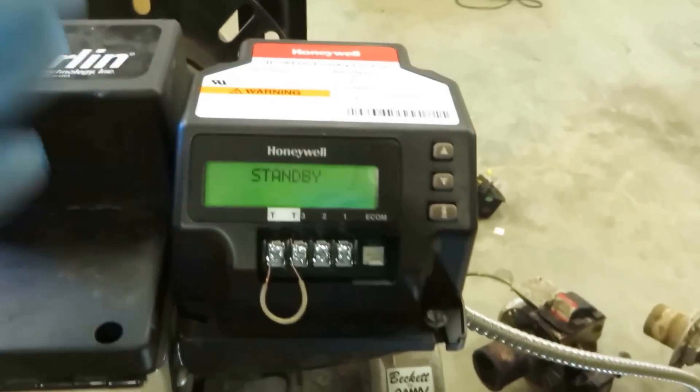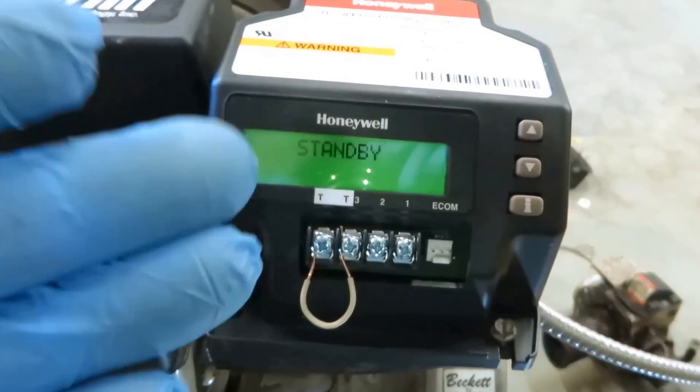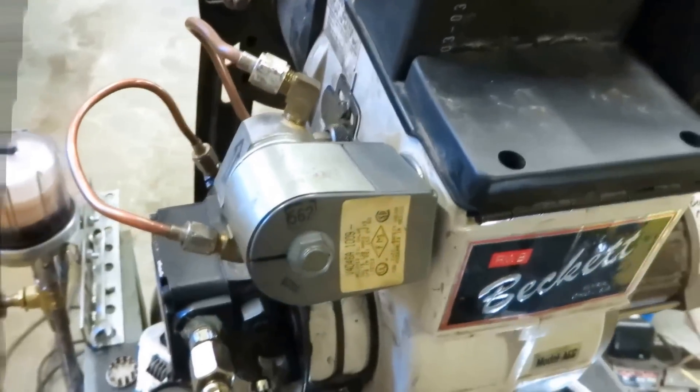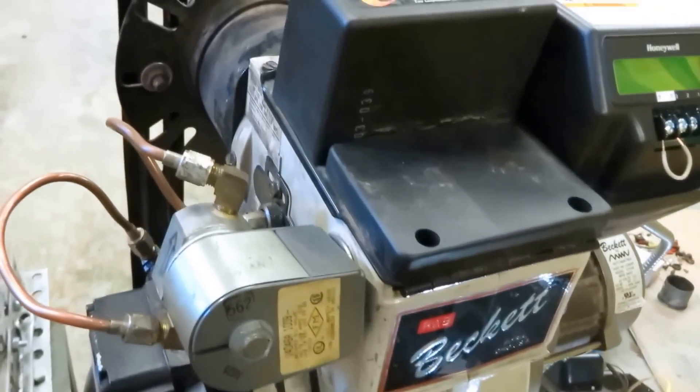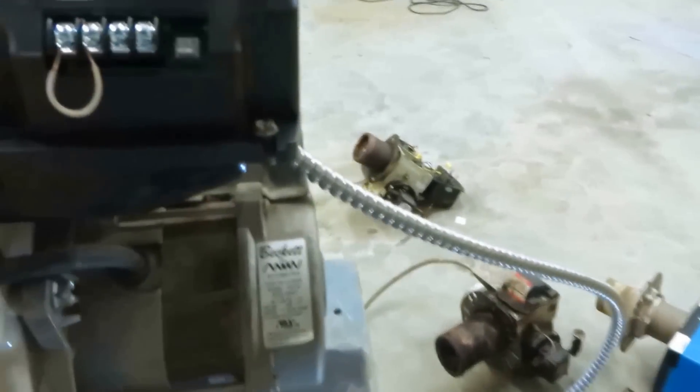What's nice about these controls is you can set what you want, pre-purge, post-purge, whatever you want to do to set the burner up. So that's the Honeywell control and we got the Carlin control I showed you also.